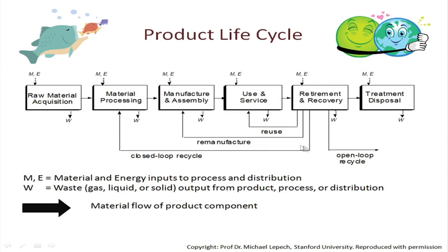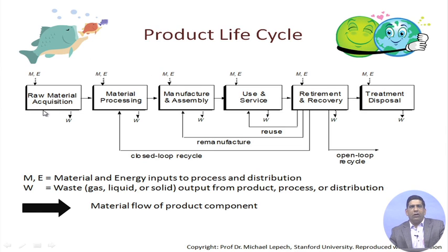This slide gives you an idea of what the product life cycle is. When we talk about product life cycle, we start from raw material acquisition — that is the very beginning, where your mining engineers help mine all the materials. For each of these boxes in the product life cycle stages, M and E represents the material and energy input to the process, W is the waste output — which does not have to be solid waste, it could be gas, liquid, or solid — and there could also be some output from the product process or distribution.